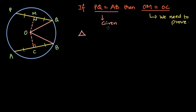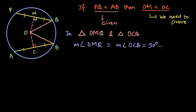One of them is triangle OMQ and the other triangle is OCB. In triangle OMQ and triangle OCB, what we see is that there are two right angles. One of them is angle OMQ.